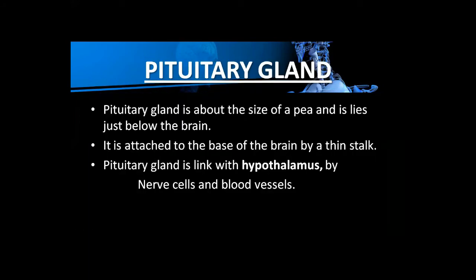The pituitary gland is linked with the hypothalamus by nerve cells and blood vessels. The hypothalamus controls the pituitary gland through two types of signals — blood vessels (carrying hormones) and nerve cells. That is why we sometimes call it the neuroendocrine system — because nerve cells are included in the endocrine system.